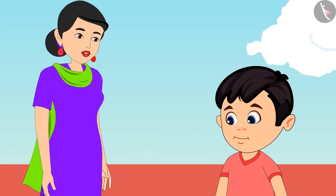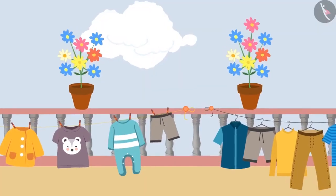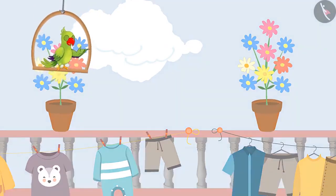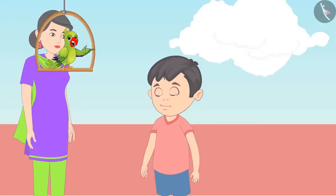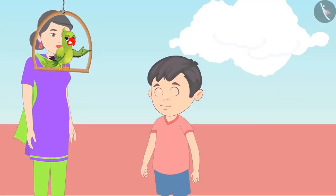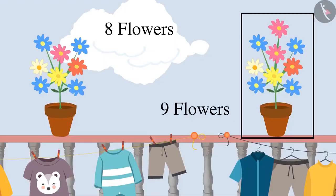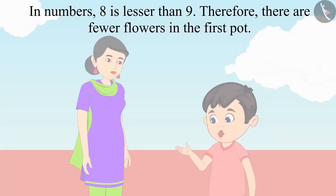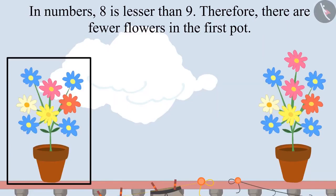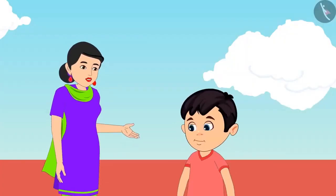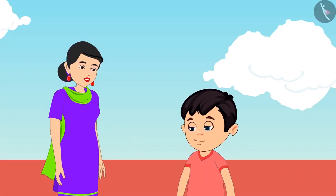Now let's look at the pots — which one has fewer flowers? There are 8 flowers in one flower pot and 9 in the other. Eight is less than nine, so the first pot has fewer flowers. Was your answer also the same? Very good, Chotu — once again you are correct. Come on, let's take all the dried clothes and go back downstairs.